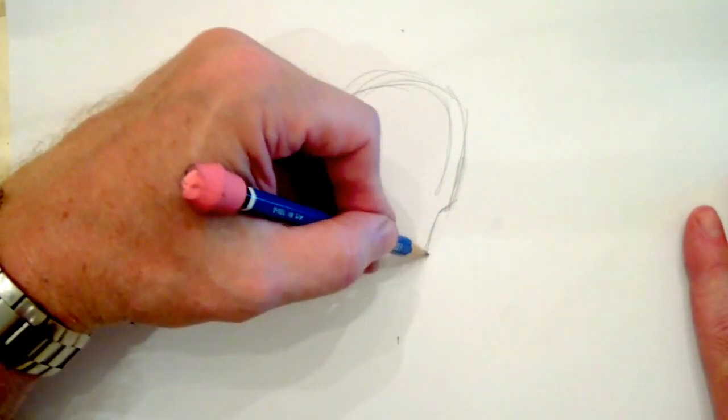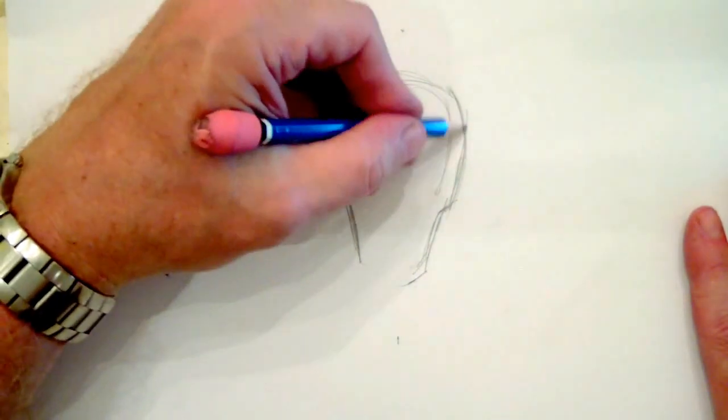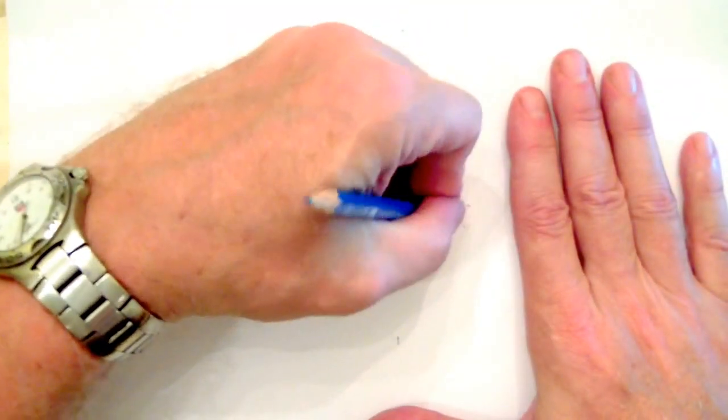So we'll start off with this sort of shape right here. It's not really an egg shape because we have these indentations, and that's because he's going to have a skinny face but he's going to have cheekbones there.